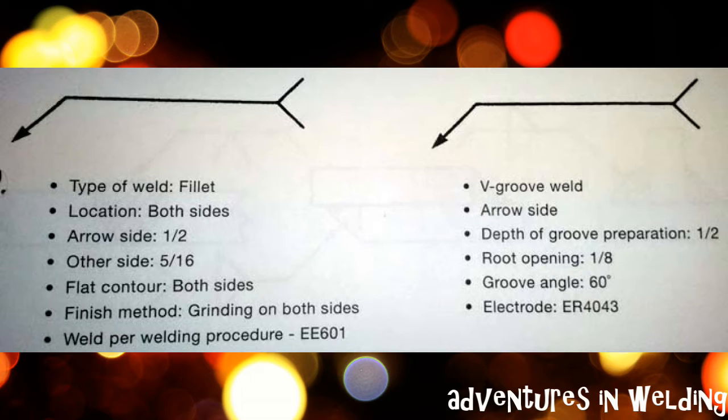Okay, on this exercise we have two welding symbol arrows that you need to fill in the details. The one on the left is a fillet weld. You're going to weld on both sides—the arrow side will have a 1/2 inch face, the other side will have a 5/16 inch face. Flat contour on both sides, you're going to be grinding on both sides per welding specification EE601. The other one on the right is a V-groove weld, arrow side only, with a depth of groove preparation of 1/2 inch. The root opening is 1/8 inch, a groove angle of 60 degrees using an ER4043 electrode. Alright, you might want to pause it here for a minute and draw in your answers. When we come back, I'll have the answers for you.